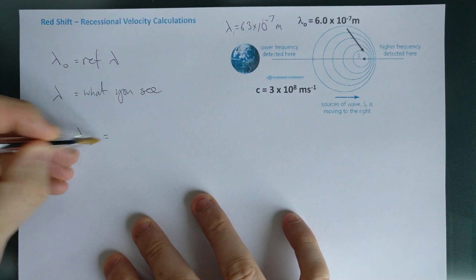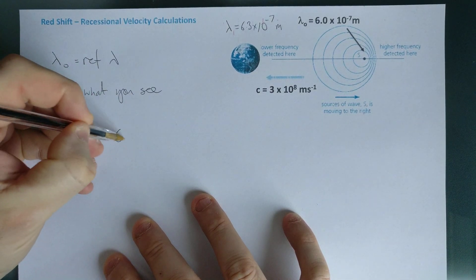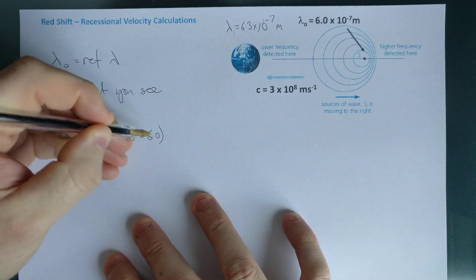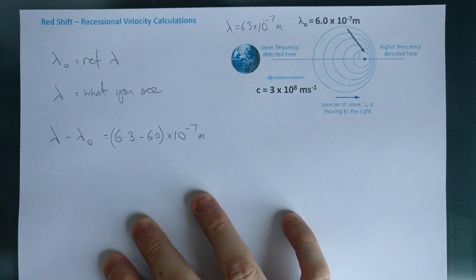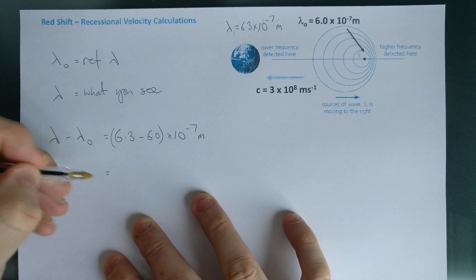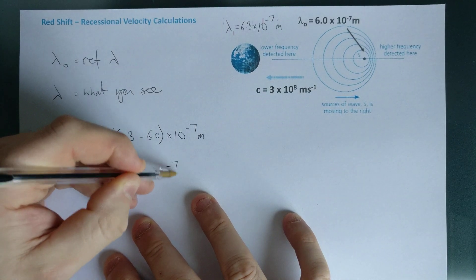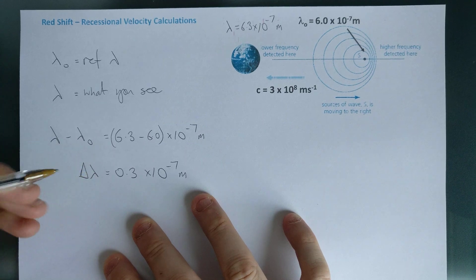Now there's clearly a difference. I can do lambda take away lambda naught, and that should equal, let's see, so we can do 6.3 take 6.0 times 10 to the minus 7 meters. Okay, well that's going to come out at 0.3 times 10 to the minus 7 meters. Now I'm going to call that delta lambda, that's my shift.